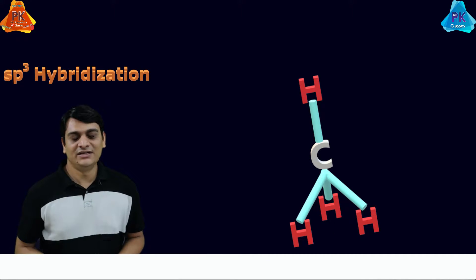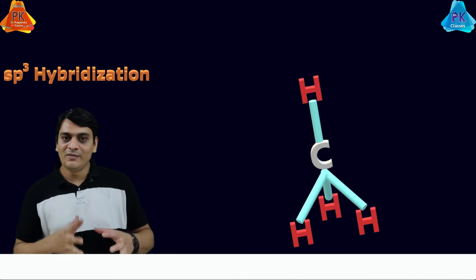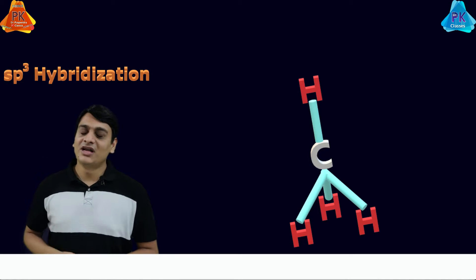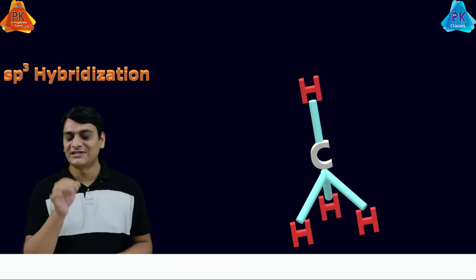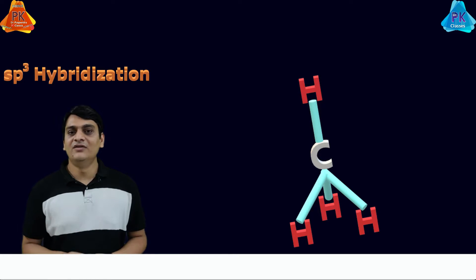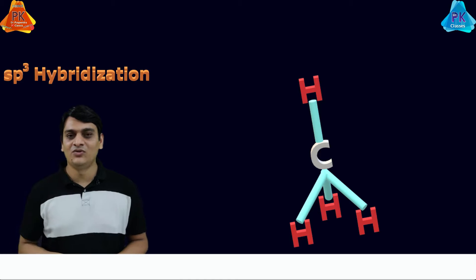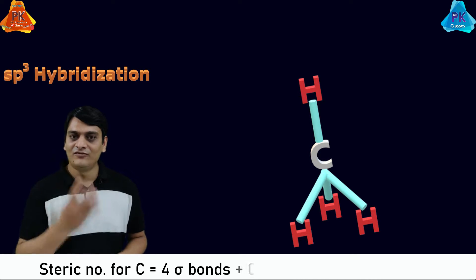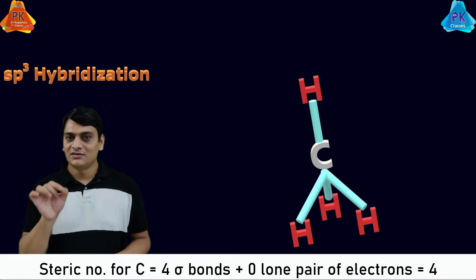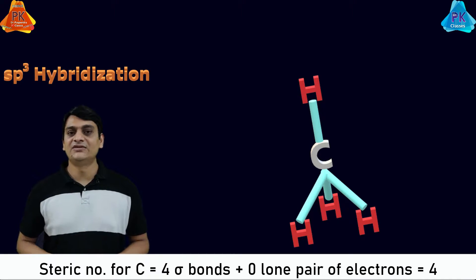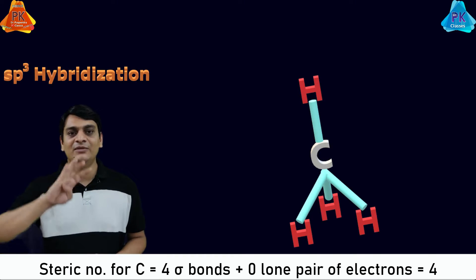Now let's take the example of methane. Methane contains one carbon and four hydrogens, all attached with covalent bonds, that is sigma bonds. If we are talking about the steric number of carbon present in methane, it equals the total number of sigma bonds plus total number of lone pair of electrons. Number of sigma bonds are 4 in methane plus lone pairs is 0, so steric number equals 4.